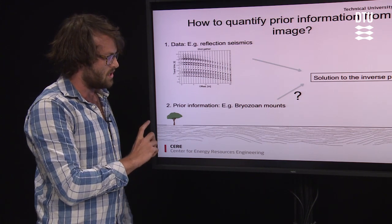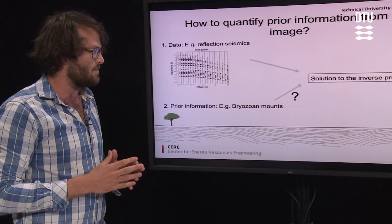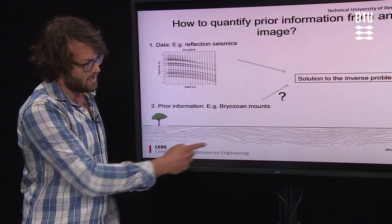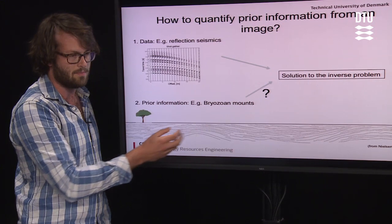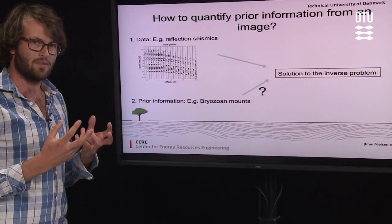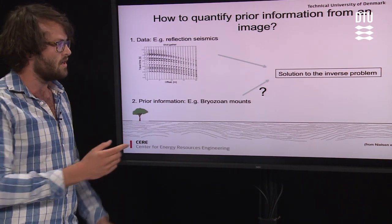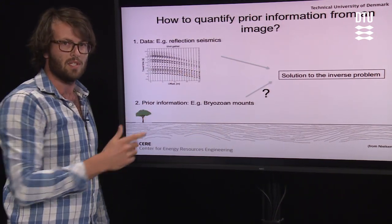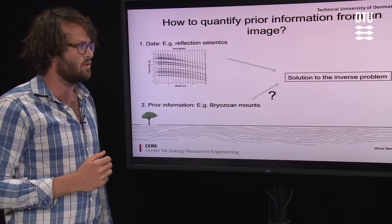What we consider here is the situation where the a priori information is given in form of an image. This image could for example be provided by a geologist. The example down here shows Bryozoan mounds and the patterns of these mounds are indicated by flint layers. So what we would like to do is to extract information in the image into a mathematical formulation in such a way that we can combine the information from the image with the information from the data to obtain a trustworthy solution to the inverse problem.